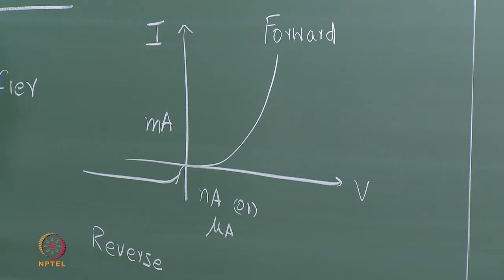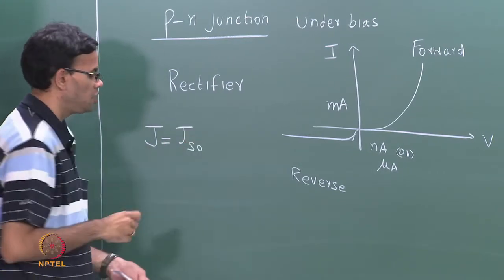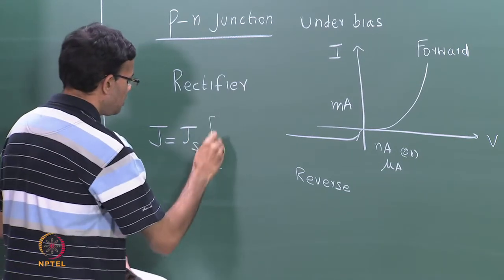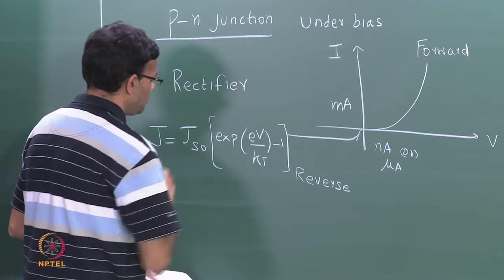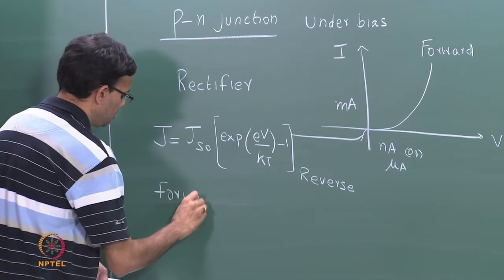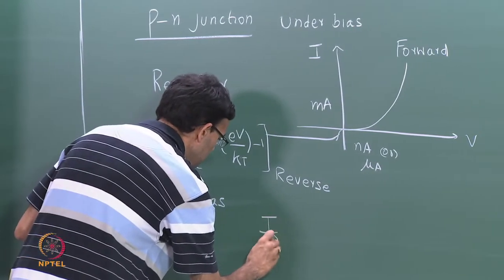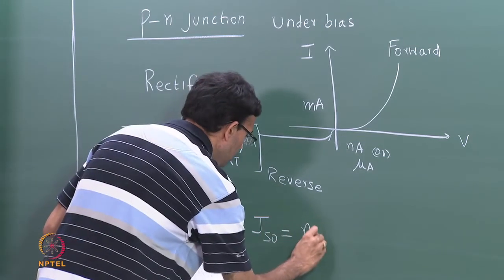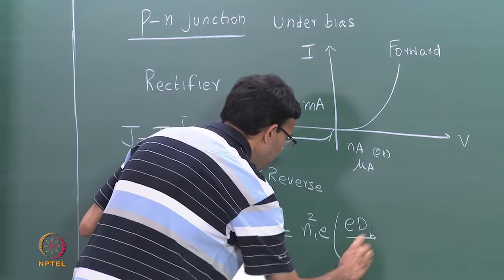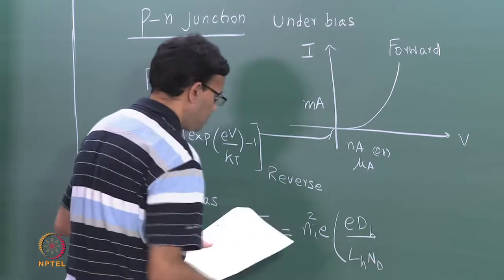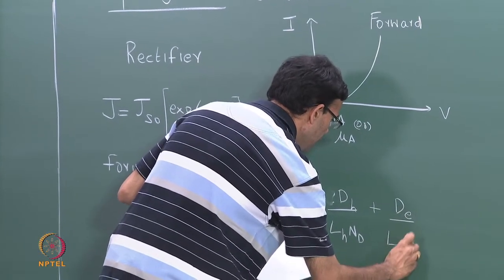We also wrote down the expression for the current in the case of a p-n junction. The expression is J equals J_S0, which is the reverse saturation current, times exponential(eV/kT) minus 1. J_S0 equals n_i² times (e·D_h / L_h·N_D + D_e / L_e·N_A), where D_h and D_e are diffusion coefficients for minority carriers, and L_h and L_e are the diffusion lengths.